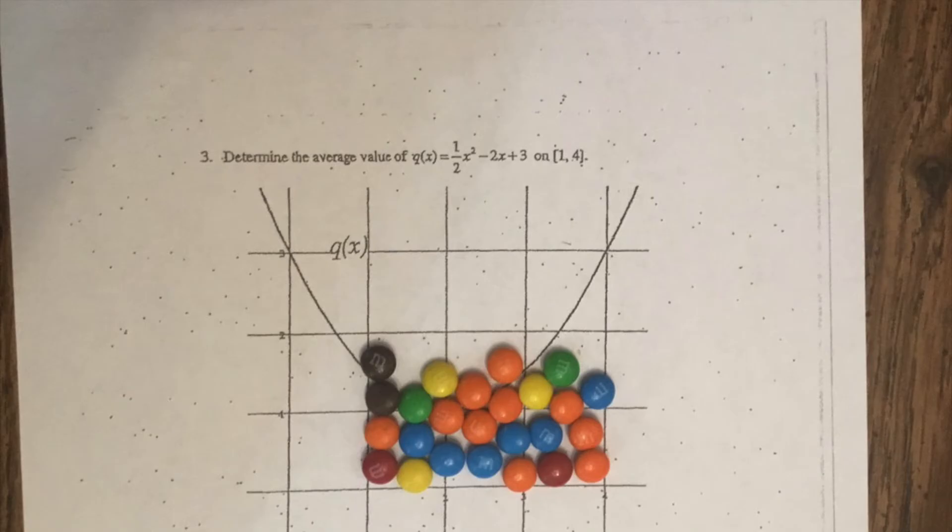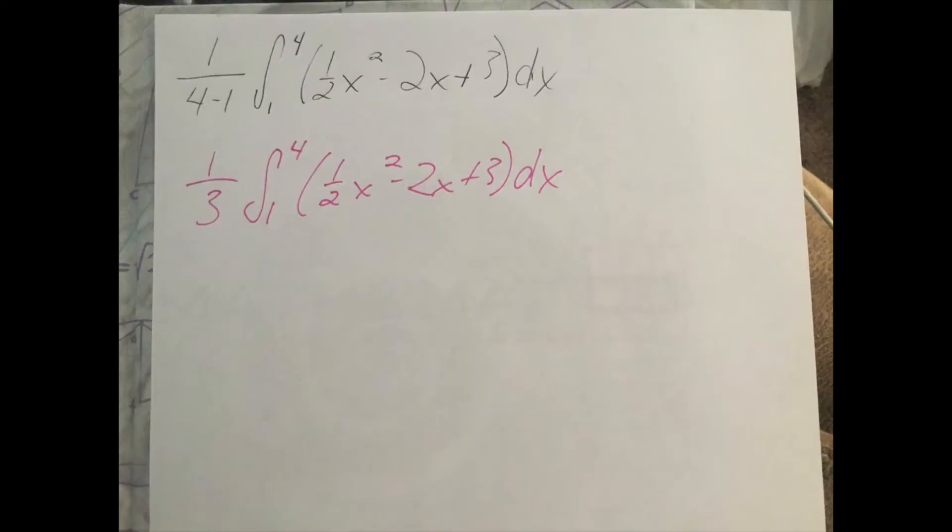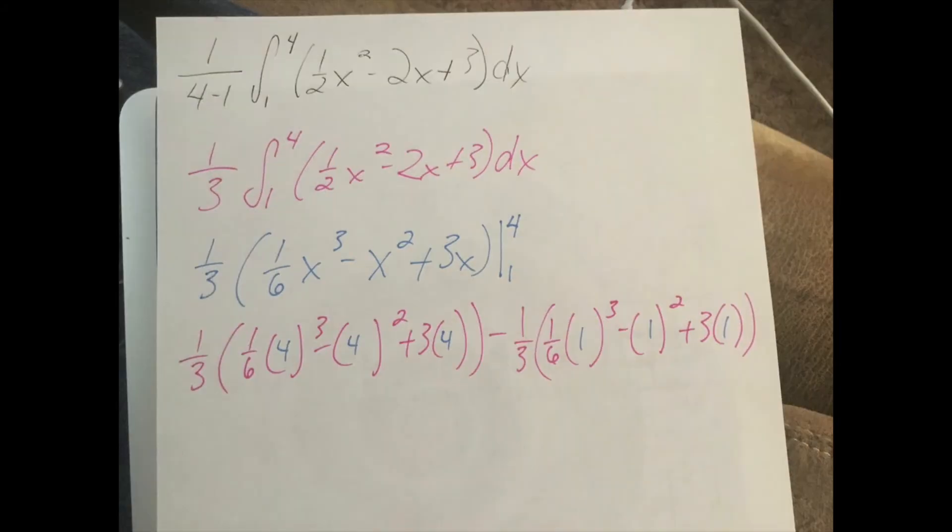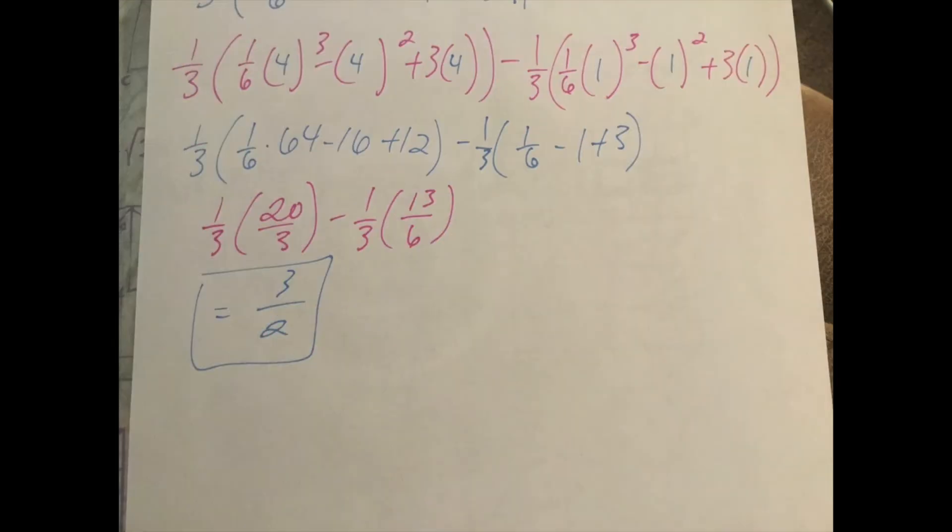When you first look at the M&Ms, you might want to say the average value here is 2, but notice all those empty gaps in there. I think it's probably a little closer to about 1.6, maybe 1.7. And here we get the real answer, which is pretty close to our initial estimate.